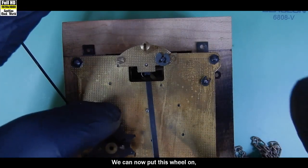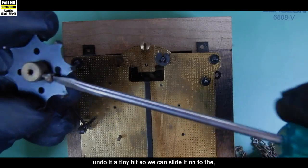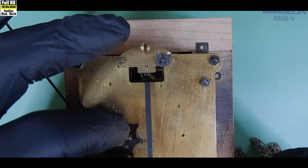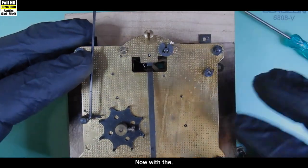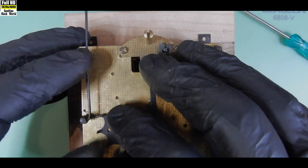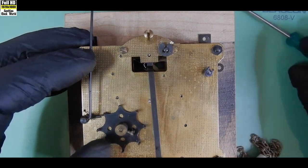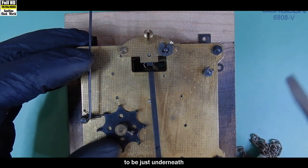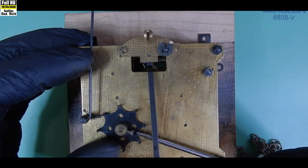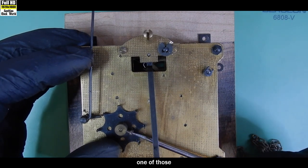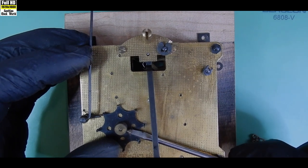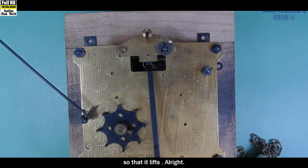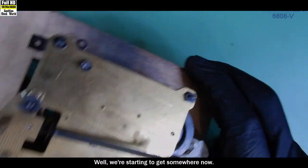We can now put this wheel on. And do it a tiny bit so we can slide it onto the post, there we go. Now with the lever, we want that little lift lever over there on the hammer to be just underneath one of those lifting lugs on that wheel so that it lifts all right. Well, we're starting to get somewhere now.